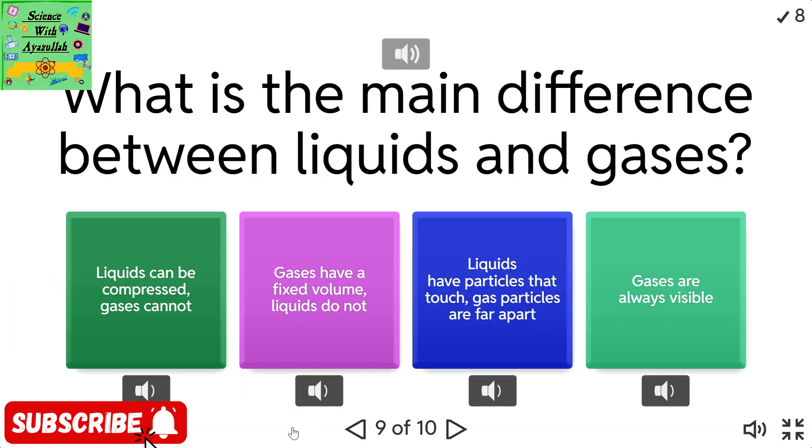What is the main difference between liquids and gases? Liquids can be compressed. Gases have a fixed volume. Liquids do not. Liquids have particles that touch. Gases are always visible.